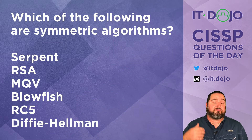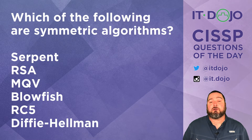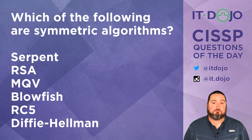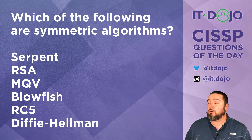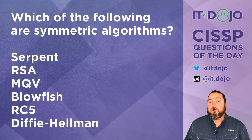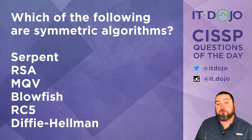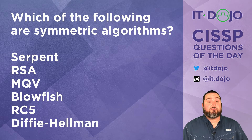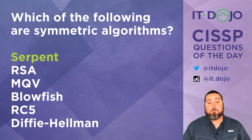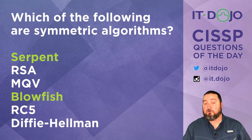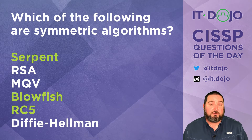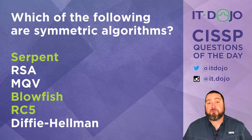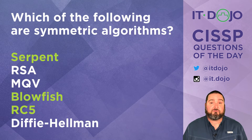My first question for you today: there's a list of algorithms — I want to know which of them are symmetric. Choose all that apply. Here are the answers: Serpent, Blowfish, and RC5 — those are all symmetric algorithms.